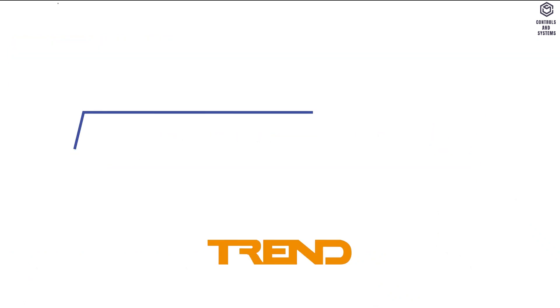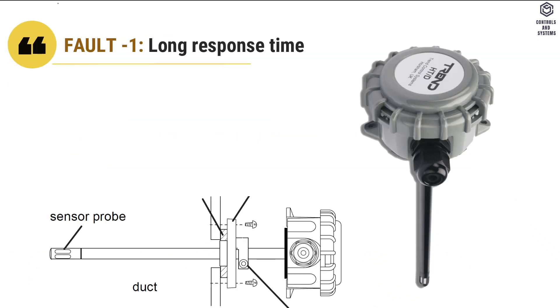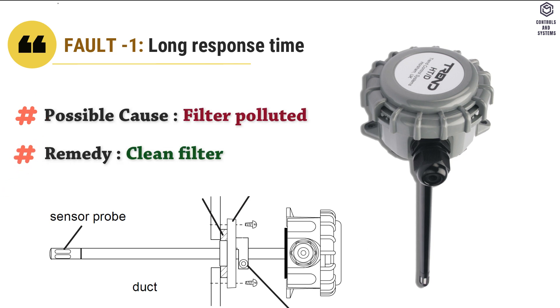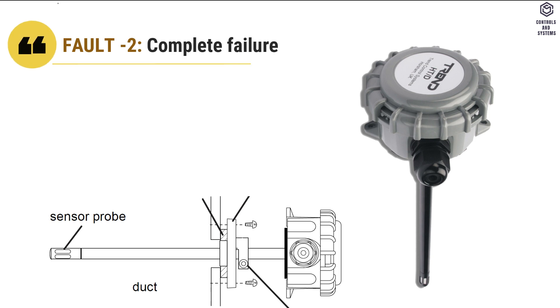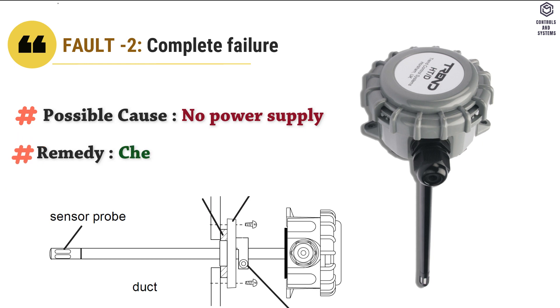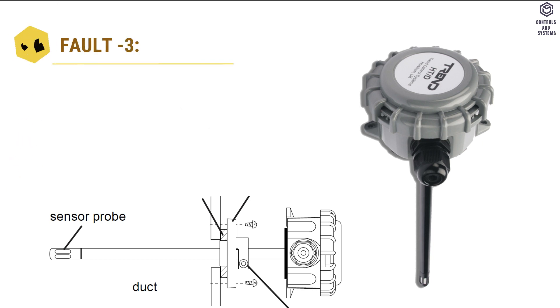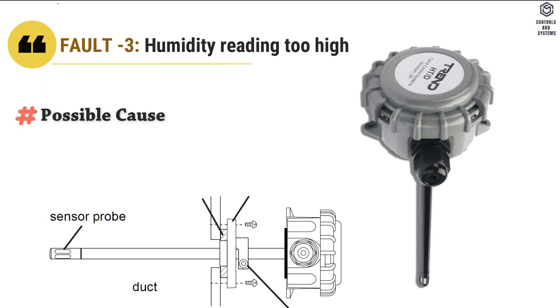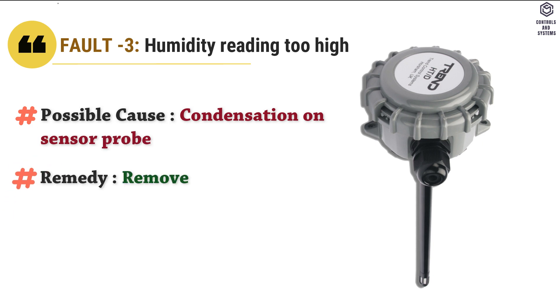Fault finding: Fault 1 is long response time. Possible cause is filter polluted. Remedy is clean filter. Fault 2 is complete failure. Possible cause is no power supply. Remedy is check power supply and cable. Fault 3 is humidity reading too high. Possible cause is condensation on sensor probe. Remedy is remove filter and carefully dry the probe.